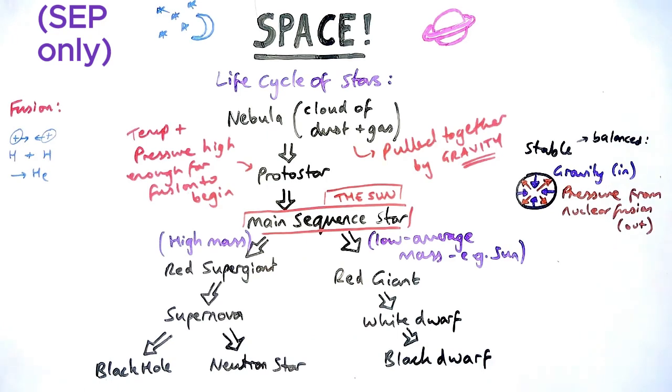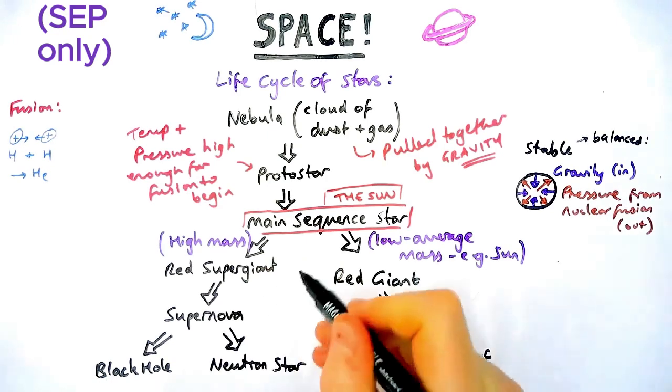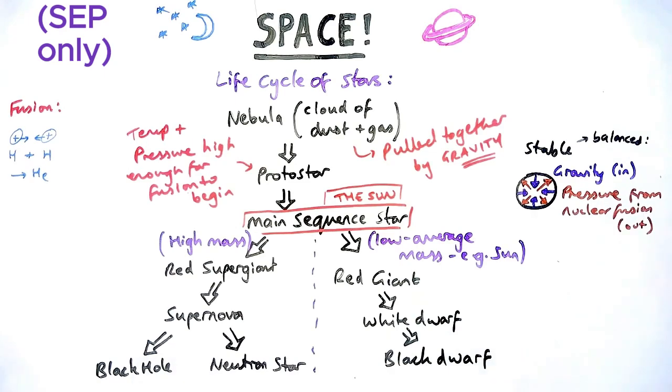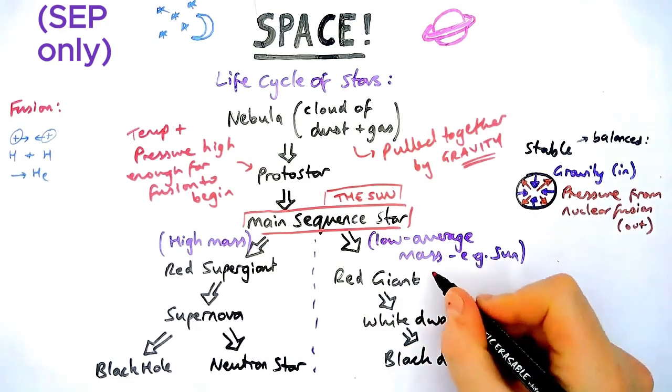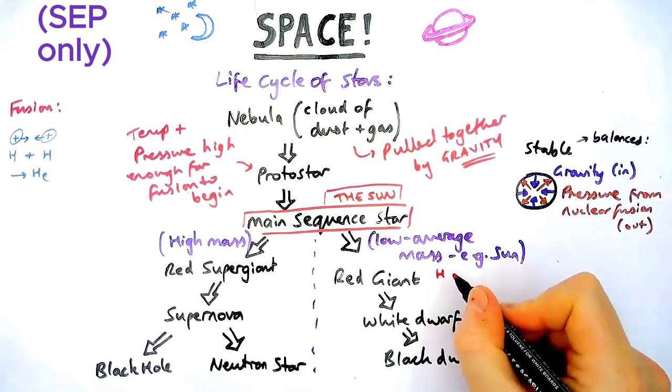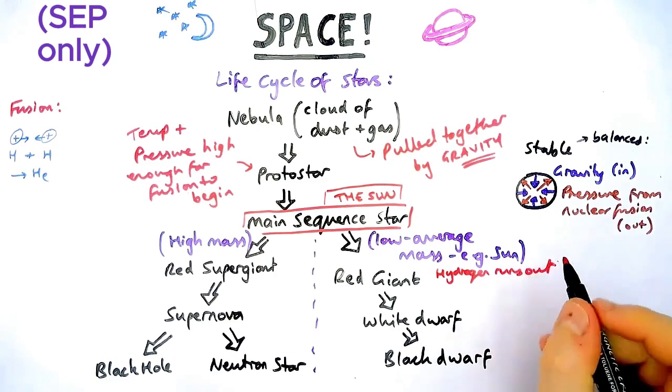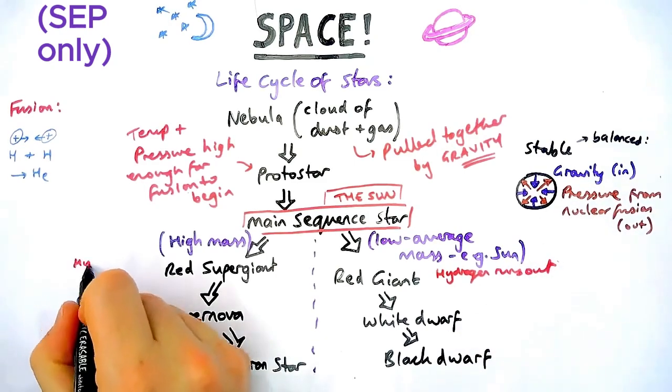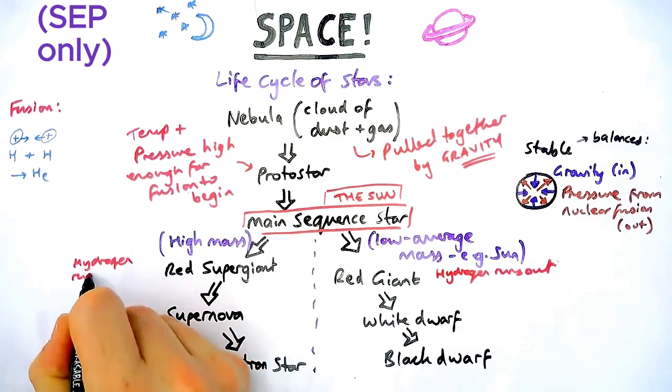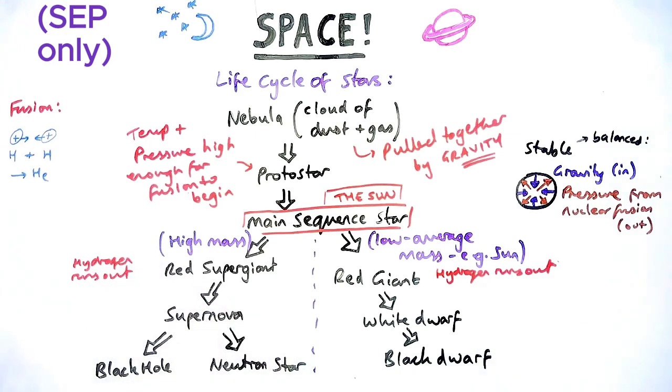Now once that stage is finished, we are going to talk about what happens when it goes to the red giant or red supergiant phase. So the red giant, first of all, which is when nuclear fusion is hydrogen to helium in main sequence stars. Once the hydrogen runs out, then it is no longer a main sequence star.